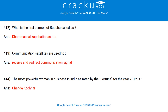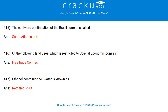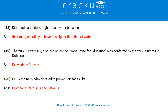What is the first sermon of Buddha called? Dhammachakkappavattana Sutta. Communication satellites are used to receive and redirect communication signals. The most powerful woman in business in India as rated by Fortune in 2012 is Chanda Kochhar. The eastward continuation of the Brazil current is called the South Atlantic Drift. Of the following land uses, which is restricted to special economic zones? Free Trade Centres. Ethanol containing 5% water is known as rectified spirit.